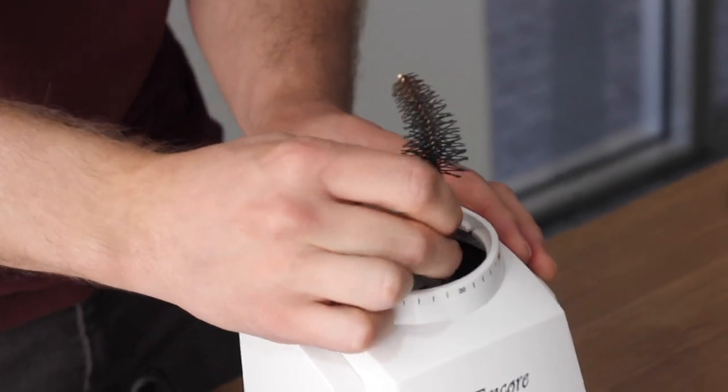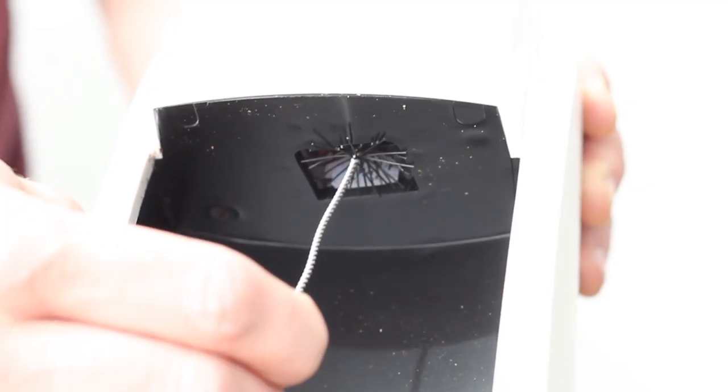You can also use the back of the wire brush and you can also come up from the chute and knock loose grinds from there. Continue to knock loose the grinds until you can see the paddle wheel at the bottom of the grind chamber.